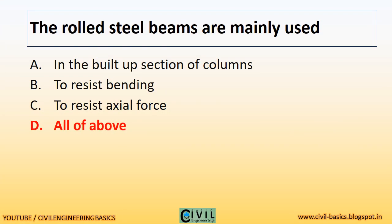The rolled steel beams are mainly used in the built-up section of columns to resist bending, to resist axial force, and all of the above.